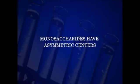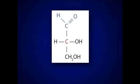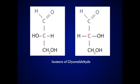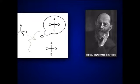Monosaccharides have asymmetric centers. All monosaccharides except dihydroxyacetone contain one or more asymmetric, that is chiral, carbon atoms and thus occur in optically active isomeric forms. The simplest aldose, glyceraldehyde, contains one chiral center — that is the middle carbon atom — and therefore has two different optical isomers or enantiomers.